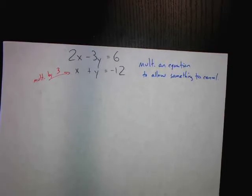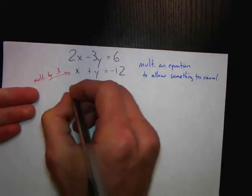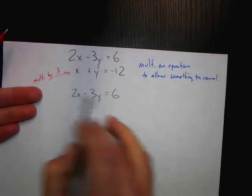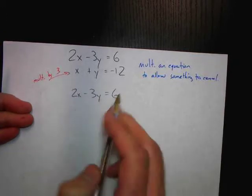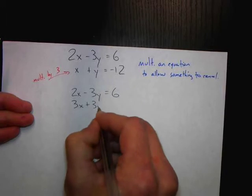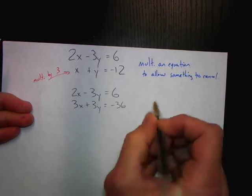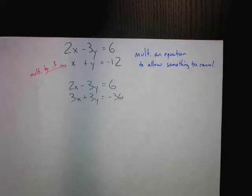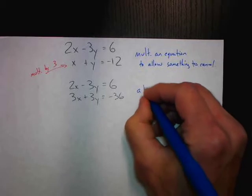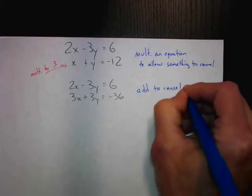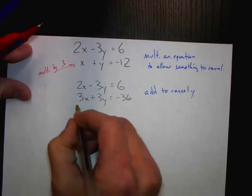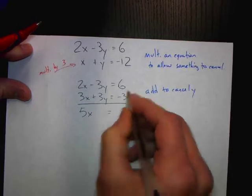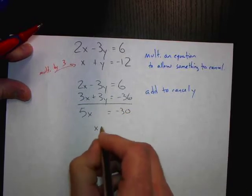Multiplying the bottom equation by 3 will allow me to cancel the y's. So here's my top equation — I'm going to rewrite that. Now for the bottom equation, I'm going to multiply everything by 3: I get 3x plus 3y equals negative 36. And now what I can do is add to cancel the y's. So I add: 2x and 3x gives 5x, my y's cancel, and I get negative 30. So x equals negative 6.